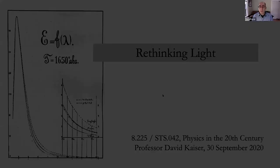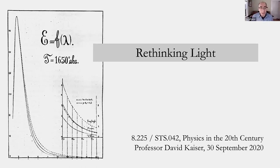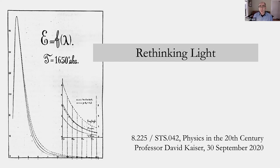We're going to launch into the first part of our new set of material on quantum theory. We talked a bit about the road toward relativity in the first few class sessions; we're going to pivot now and talk about this other amazing edifice of what becomes known as modern physics — quantum theory — as it was getting pieced together over the first quarter century or so of the 20th century.